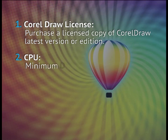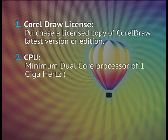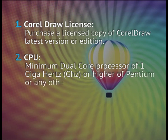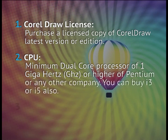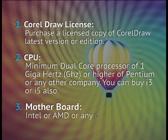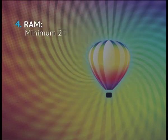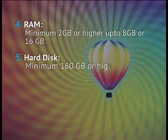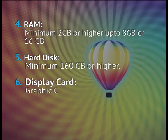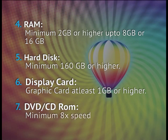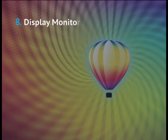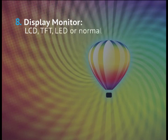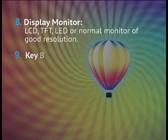Number 2: CPU — minimum dual core processor of 1 GHz or higher, Pentium or any other company. You can buy i3 or i5 also. Number 3: Motherboard — Intel or AMD or any other brand. Number 4: RAM — minimum 2 GB or higher, up to 8 GB or 16 GB. Number 5: Hard Disk — minimum 160 GB or higher. Number 6: Display Card — graphic card at least 1 GB or higher. Number 7: DVD or CD-ROM — minimum 8x speed. Number 8: Display Monitor — LCD, TFT, LED or normal monitor of good resolution.